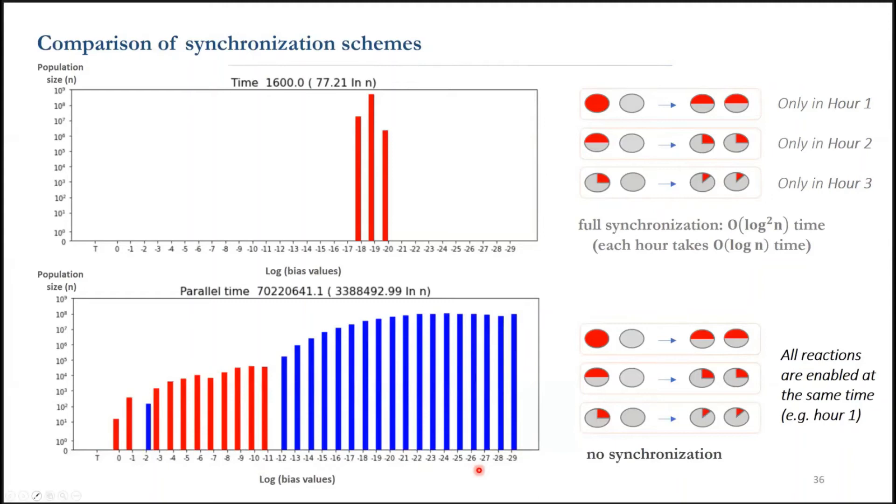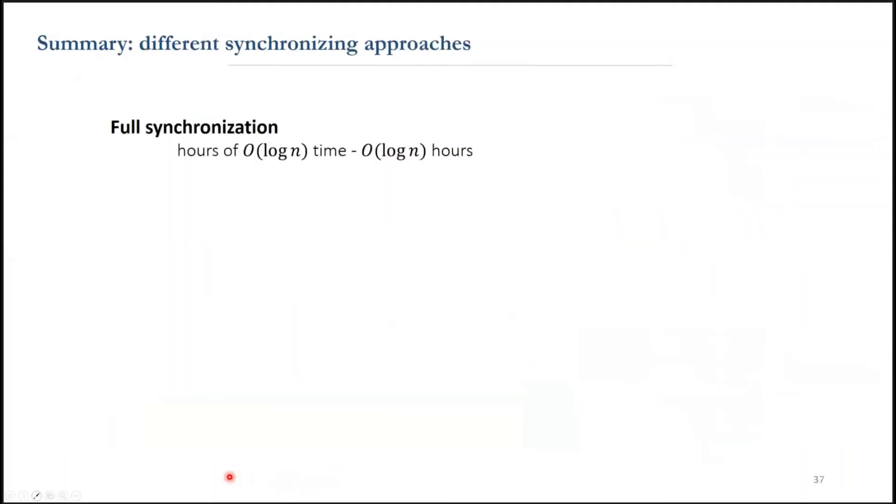Since we started with more red agents, so even allowing cancels between different biases would not work at this point.